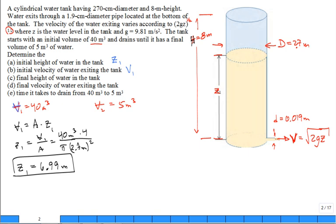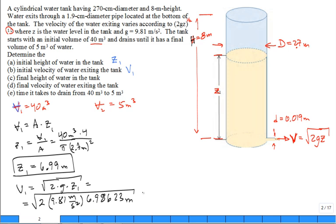Part b, what is the initial velocity of water exiting the tank? v1 is given by the square root of 2 times g times z1, so that's 2 times 9.81 meters per second squared times 6.98623 meters. We find that v1, the exit speed initially, comes out at 11.7 meters per second.